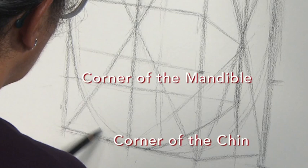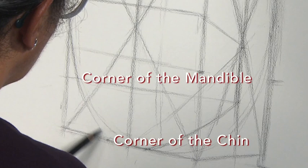Then we will angle sight from the corner of the mandible to the corner of the chin. Now we have built the structure of the mandible.